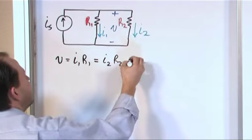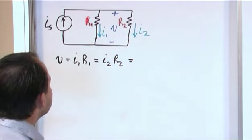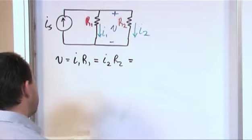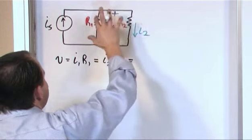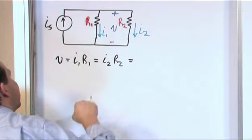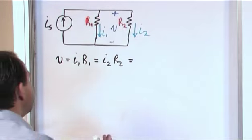But also note that these guys are in parallel. We already learned how to combine two resistors that are in parallel. So if we were to do that and make an equivalent resistance here, the voltage across that equivalent resistance would be the same V as what we have here.